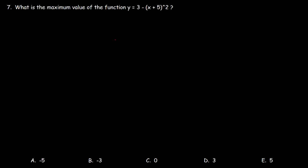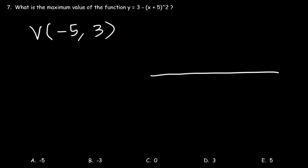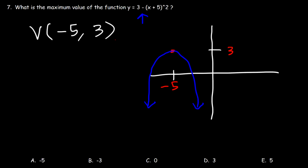Number seven: what is the maximum value of y equals 3 minus (x + 5) squared? To find the maximum, find the vertex. Since we see (x + 5), the x-coordinate is negative 5; the 3 stays the same, giving vertex (−5, 3). There is a negative sign in front of x squared, so the graph opens downward. The maximum value is the y-coordinate of the vertex, which is 3. Answer D is correct.